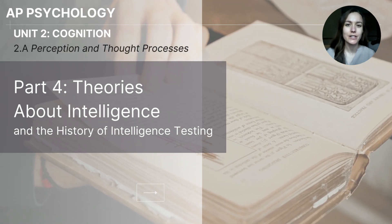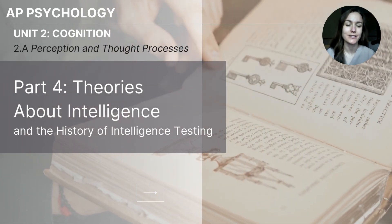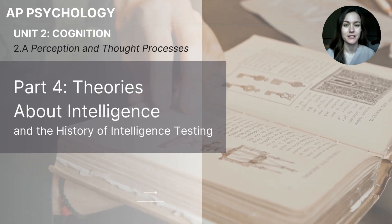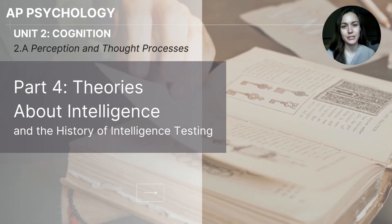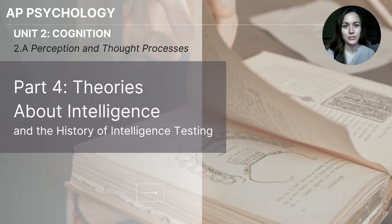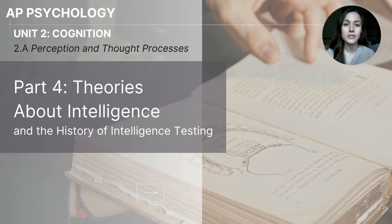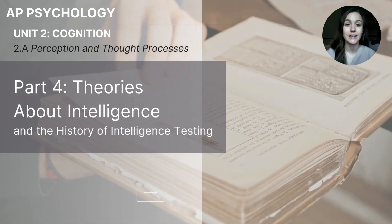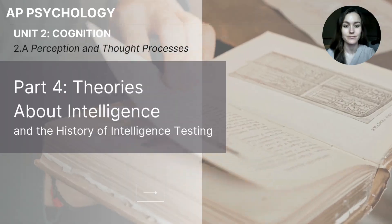Hi, everyone. This video is part four of the 2A series on perception and thought processes from unit two on cognition for AP psychology students. This particular lesson focuses on how we've come to define and assess intelligence.